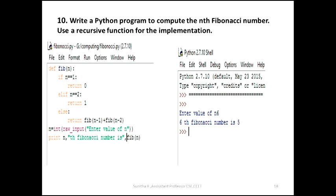If you have a function definition using def, then the function name, then we add an argument. All the statements are inside the function body. Inside the function definition, we have the statement fib(n-1). Here fib(n-1) is calling the same function — the function name is fib. So the function definition contains a function calling statement. That is the recursive function — a function calling itself.